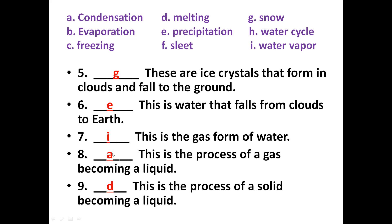Answer number eight is A. Number nine: this is the process of a solid becoming a liquid — this is the process of melting. The answer for number nine is melting, option D. When you see ice melting to water, that is called melting.